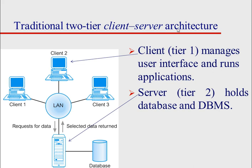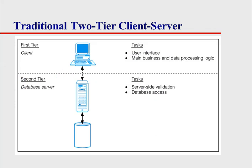So now we get into the traditional two-tier client-server architecture. Here, we have the clients — the client has the user interface and applications — but the server is what holds the database and the database management system. We're going to have a database management system on a server along with the database, and then the computers themselves will manage the interface and the applications. You can see a picture of it: the client has the interface with the logic, but the server has the database management system and the database access. This way, we don't have a database management system on every computer, but it's not a dumb terminal either — the computer has the application, the logic, and everything there as well.